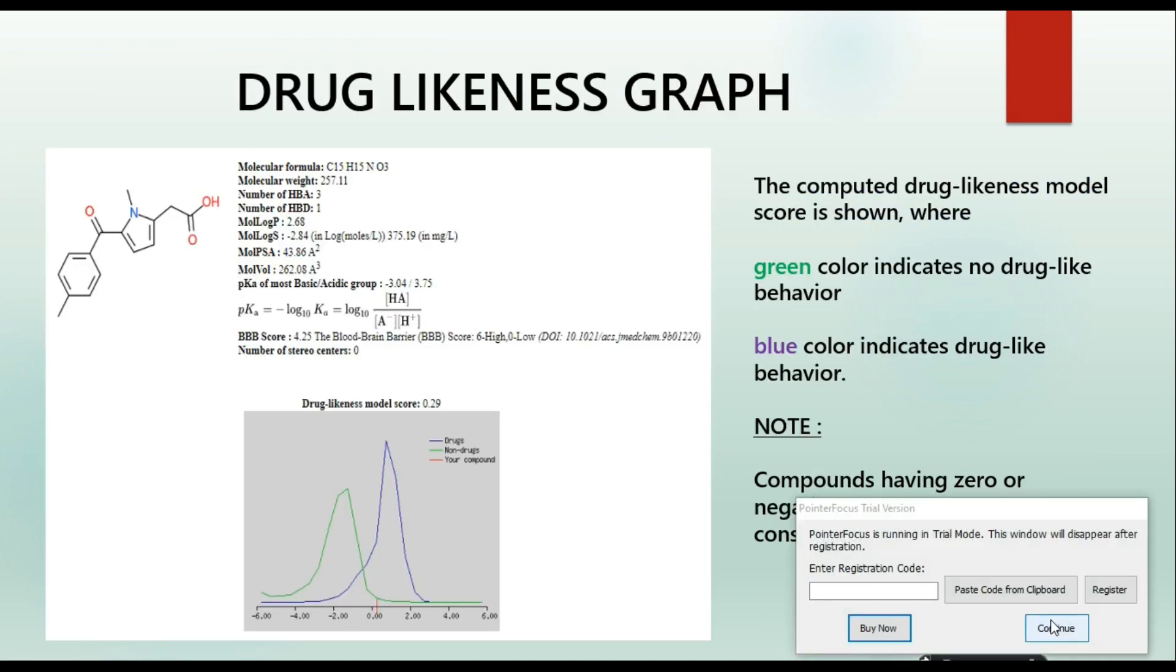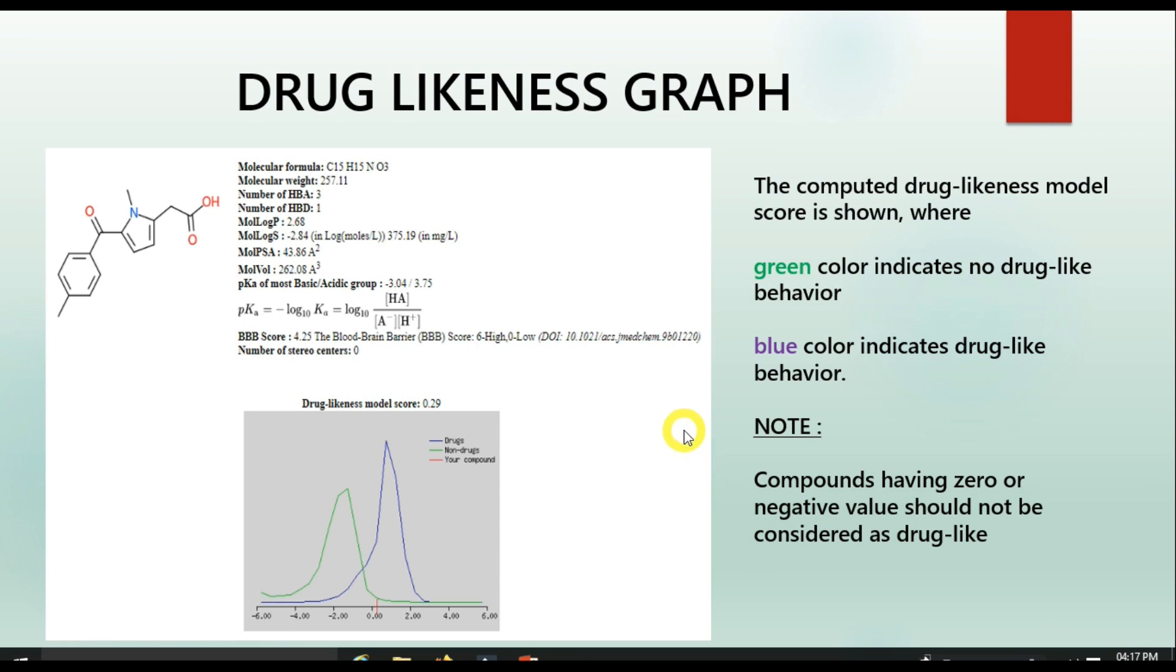Let's go with our drug likeness graph and see what information we can get from this. Here, we have an example calculation which is computed using Molsoft online server for a drug. New information can be noted from the data. Apart from the Lipinski and Veber's rule, we can also confirm the drug likeness with the simple drug likeness graph displayed. Here you can see that the graph contains two bell-shaped curves, one with green color and the other with blue color, and the drug likeness score is plotted along the x-axis.